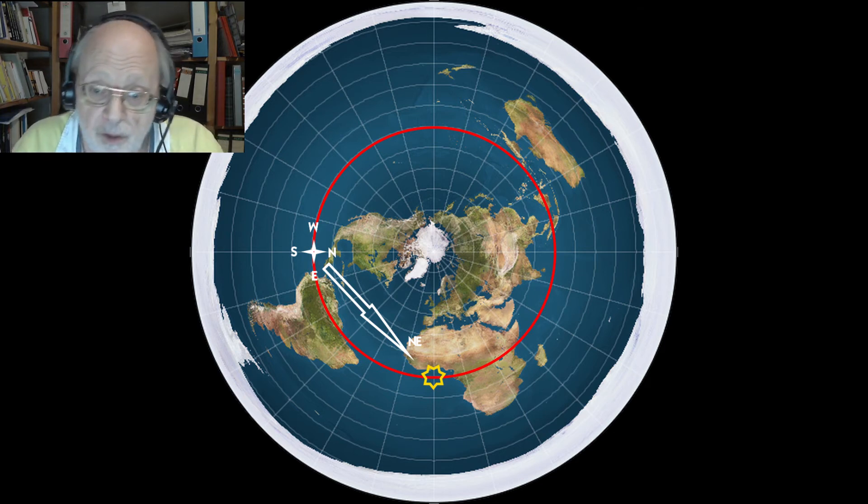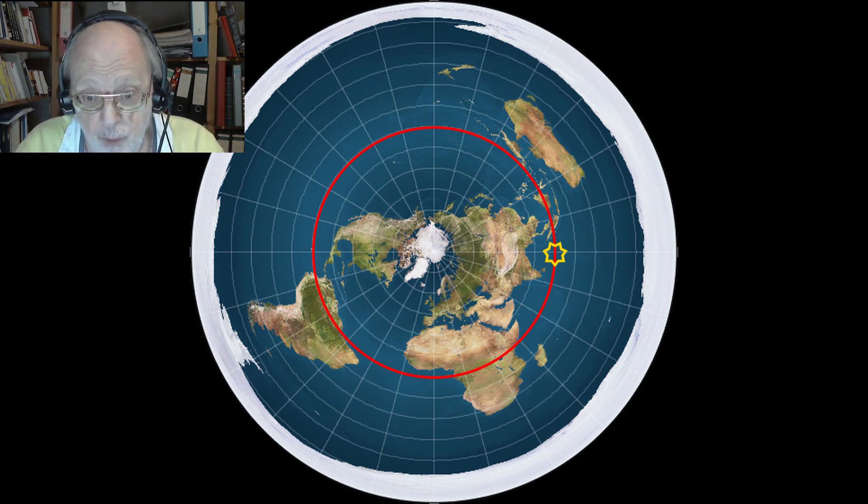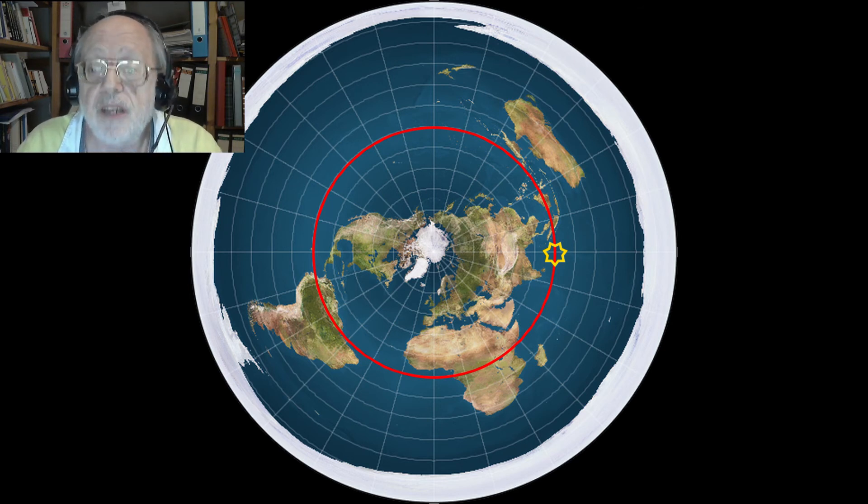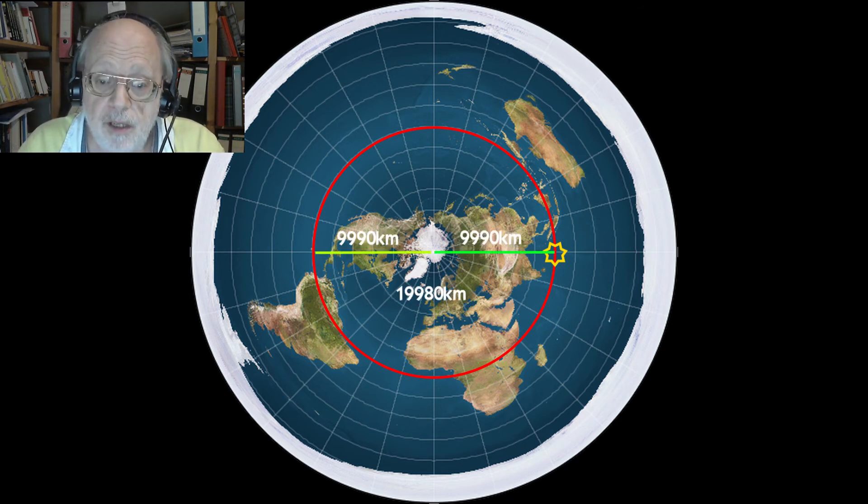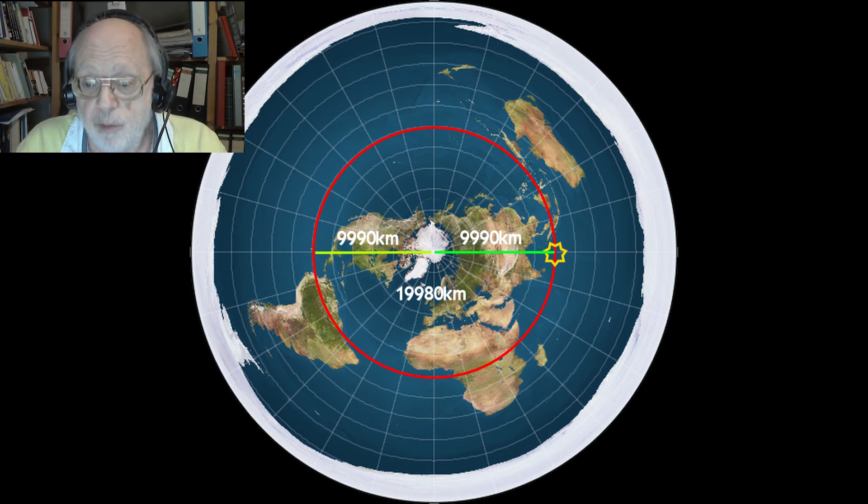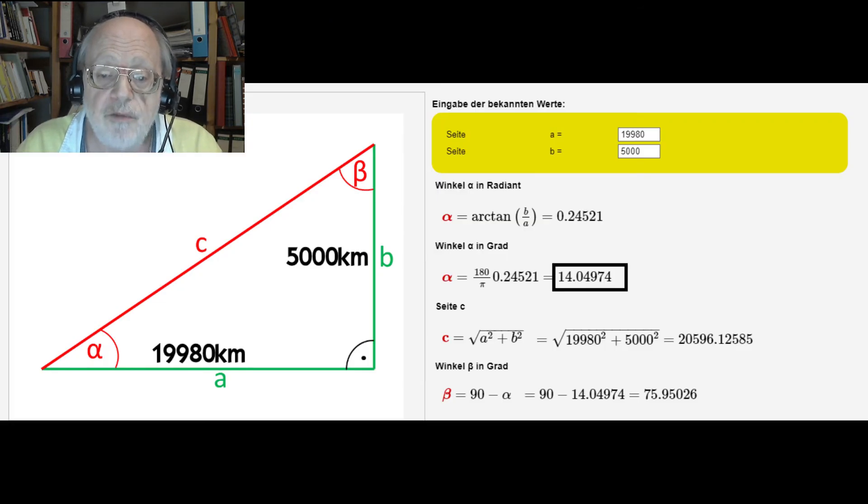While we are at it, we can also use planar trigonometry to calculate where the sun would be at the equator at midnight at the beginning of spring, exactly on the other side of the pole. The distance between the equator and the pole is, as already said, 9,990 km. At midnight, the sun is exactly the same distance on the other side of the pole that totals to 19,980 km. With a height of the sun above the flat earth of 5,000 km, the apparent height of the sun is 14 degrees above the horizon.